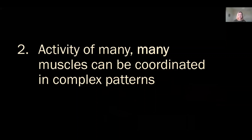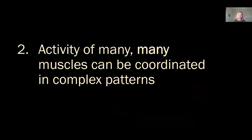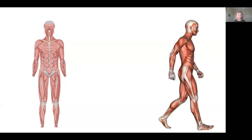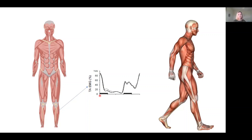The second thing to understand is that the activity of many many muscles can be coordinated in complex patterns. A really good example is walking — something we do every day that involves tens and tens of muscles coordinated in a very precise manner. We can stick electrodes on top of some of those muscles and record what they're doing. This is the activity of the tibialis anterior on the front of your shin — on the x-axis you can see where you put your heel down, walk through the stride, pick your foot up, swing through the air, and put it down again.